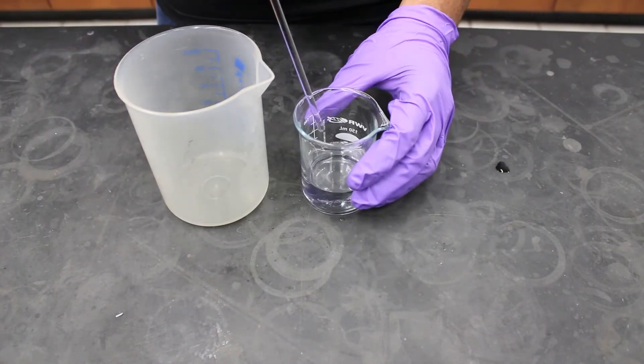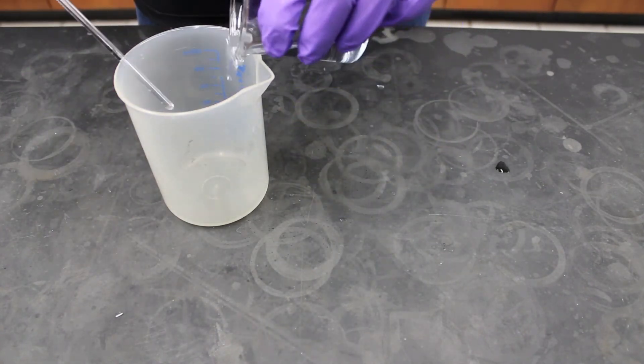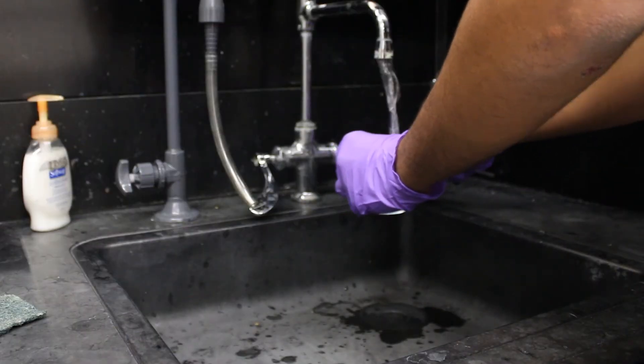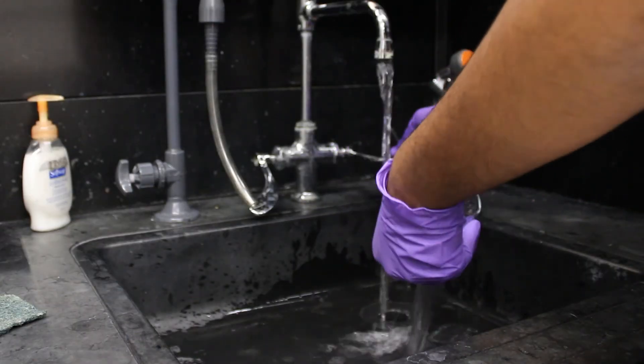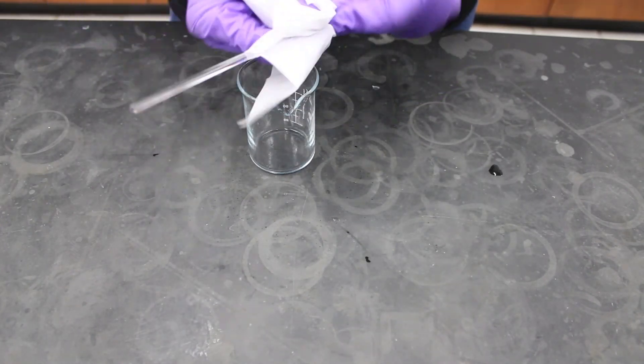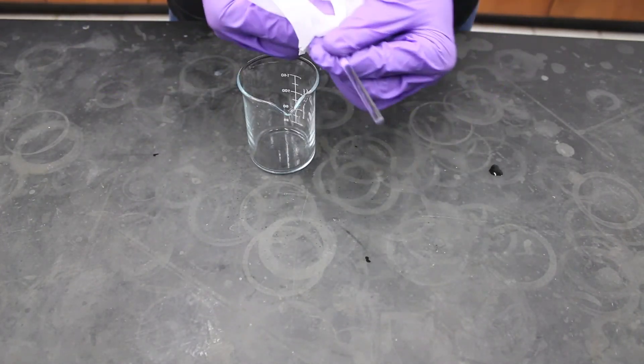Now pour out the solution into a large plastic beaker. Wash your beaker and glass rod in the washing area. Dry the glass rod and the inside of your beaker with Kim wipes.